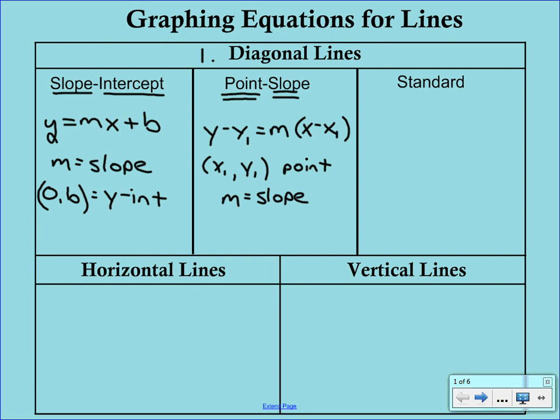The third form of the equation is standard form. Standard form is capital Ax plus capital By equals capital C. This one really is probably the least useful because from it we don't know the slope, we don't know the y-intercept, and we don't know a point on the graph.